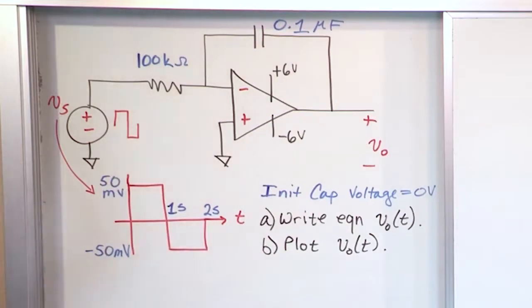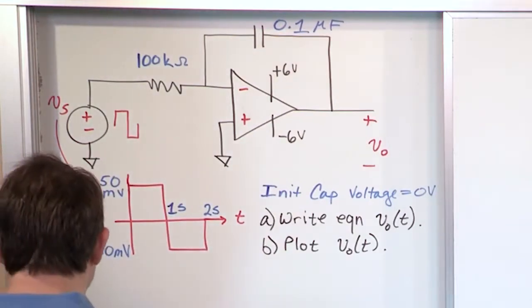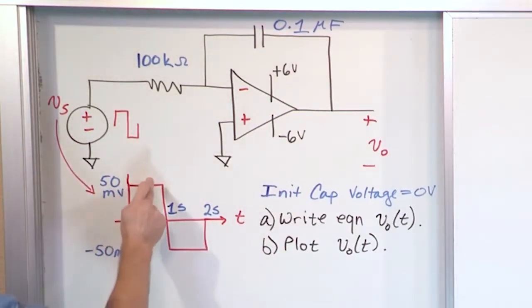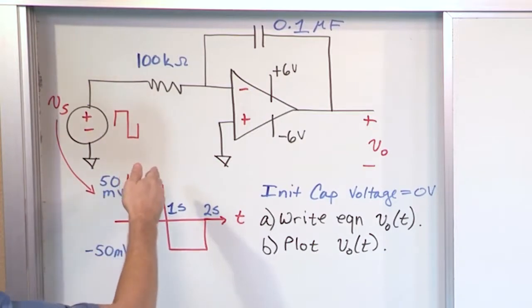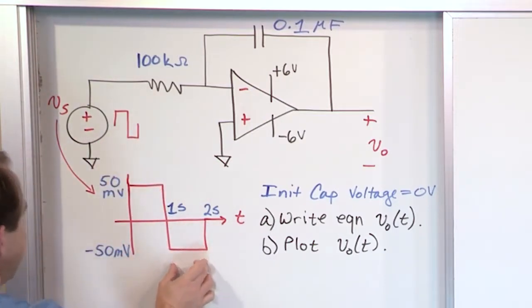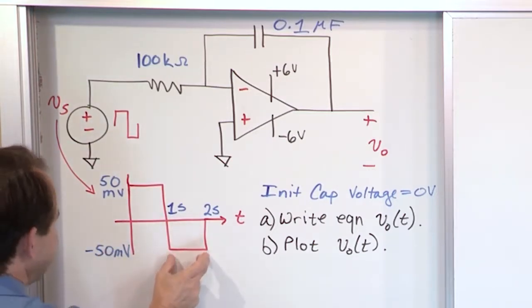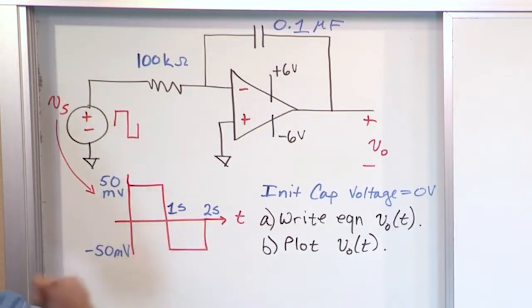What we need to do, remember I taught you that when you have a discontinuous jump like this, where it just jumps, or it could be like a triangle pulse with a discontinuity, any time you have that, you need to break this up into regions. We're going to break this pulse up into region one, going from zero to one second, and region two, which is going from one to two seconds.